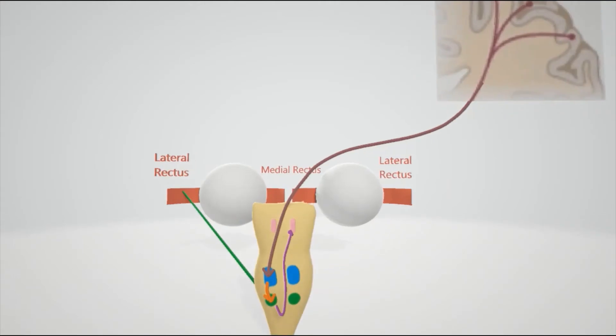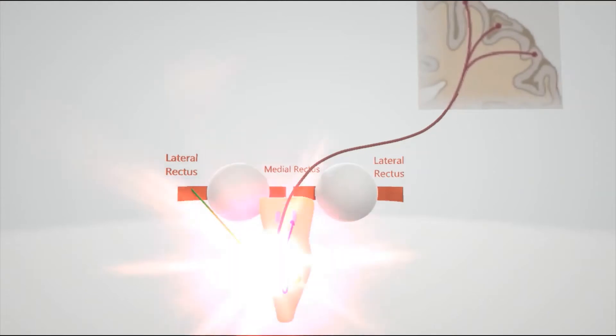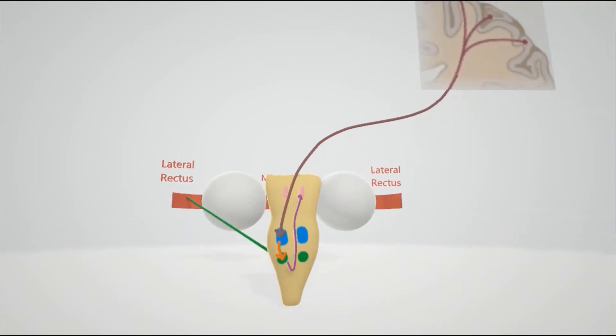So what happens is, let's say a person decides he wants to look to the left. So the motor cortex sends a signal to here, to the blue area, first to the PPRF, the paramedian pontine reticular formation, which sends a signal to the abducens. This green dot over here is the abducens in the pons.